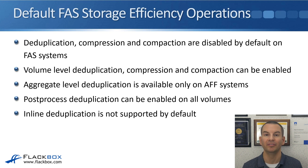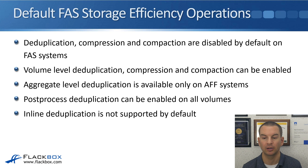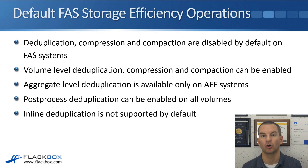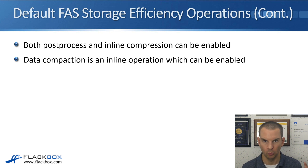Looking at the defaults on the FAS: deduplication, compression, and compaction are disabled by default on FAS systems, because you want to check the impact on performance before running them. Volume-level deduplication, compression, and compaction can all be enabled on FAS. Aggregate-level deduplication is only available on AFF systems. Post-process deduplication can be enabled on all volumes. Inline deduplication is not supported by default on FAS, but you can turn it on. Both post-process and inline compression can be enabled, and data compaction is an inline operation which can be enabled.